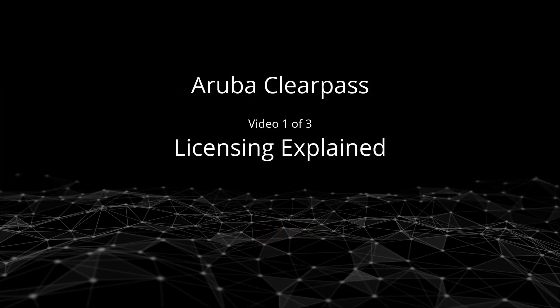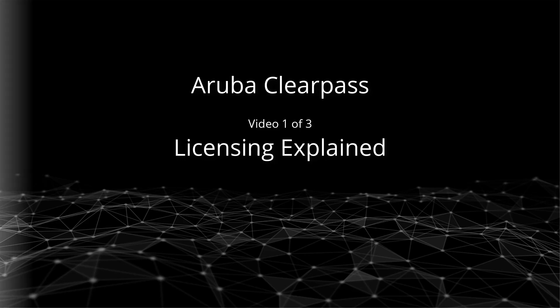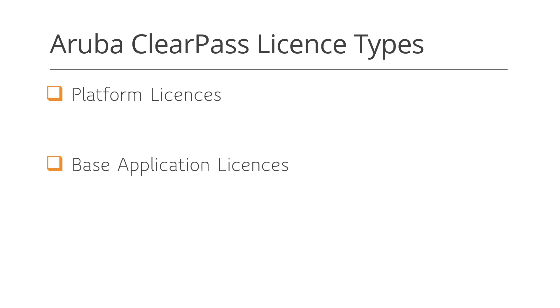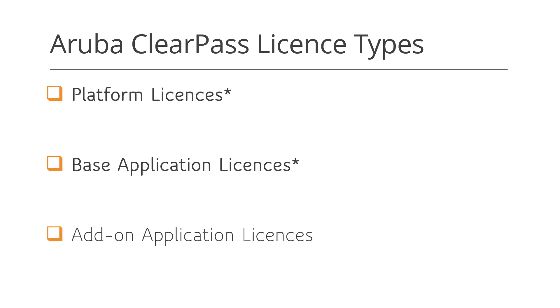In this video we'll explain Aruba ClearPass licensing. There are three major license types: platform, base application, and add-on application. Platform and base application licenses are both required for a functioning ClearPass deployment. Add-on application licenses extend ClearPass's functionality and are optional.